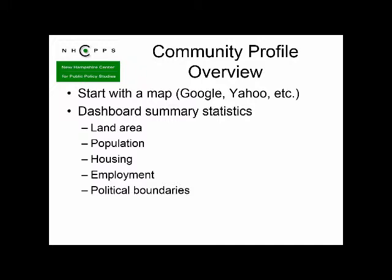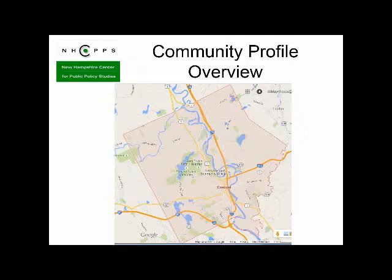It's always good to start with a map so you can show people where you are, along with summary statistics like land area, population, basic housing data, employment, and political boundaries. Creating a map is pretty easy — you can do that in Google or Yahoo. This is a map I created in a couple of minutes by searching 'Concord New Hampshire' on Google.com. The first result is a map of Concord that's actually pretty detailed considering it's free from Google Maps. You can see the political boundaries, highlights like the watershed, major highways, and so forth.